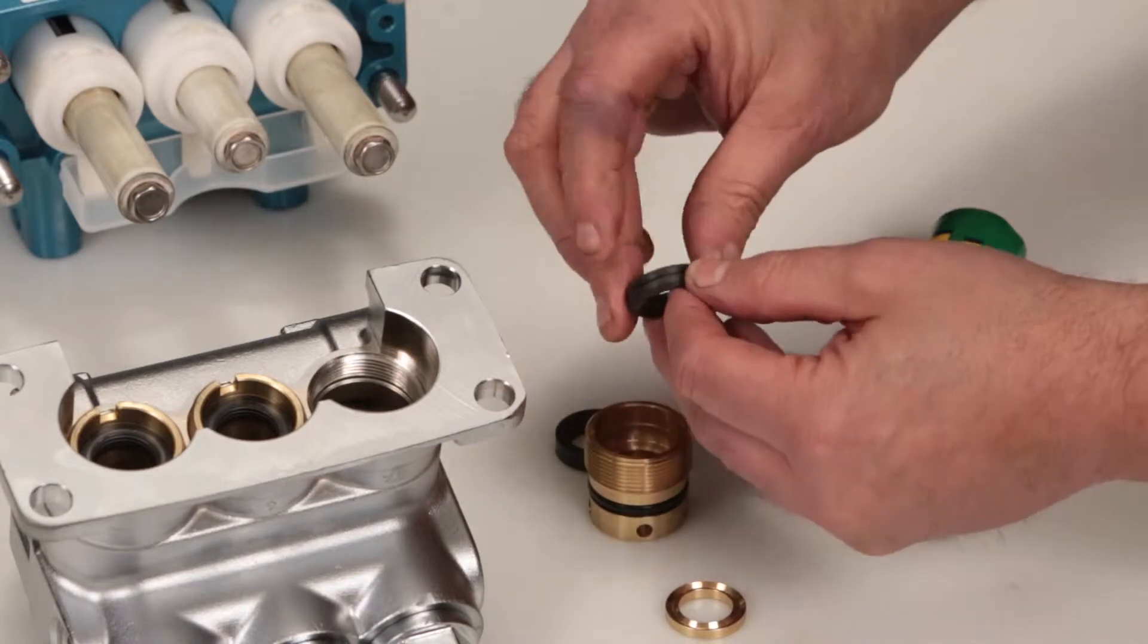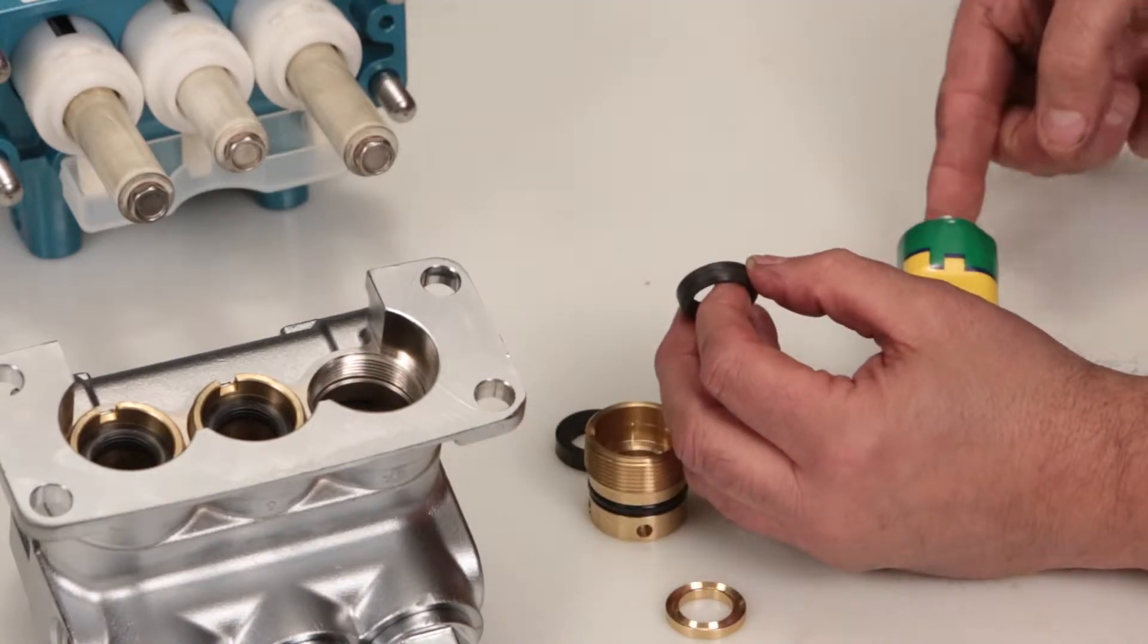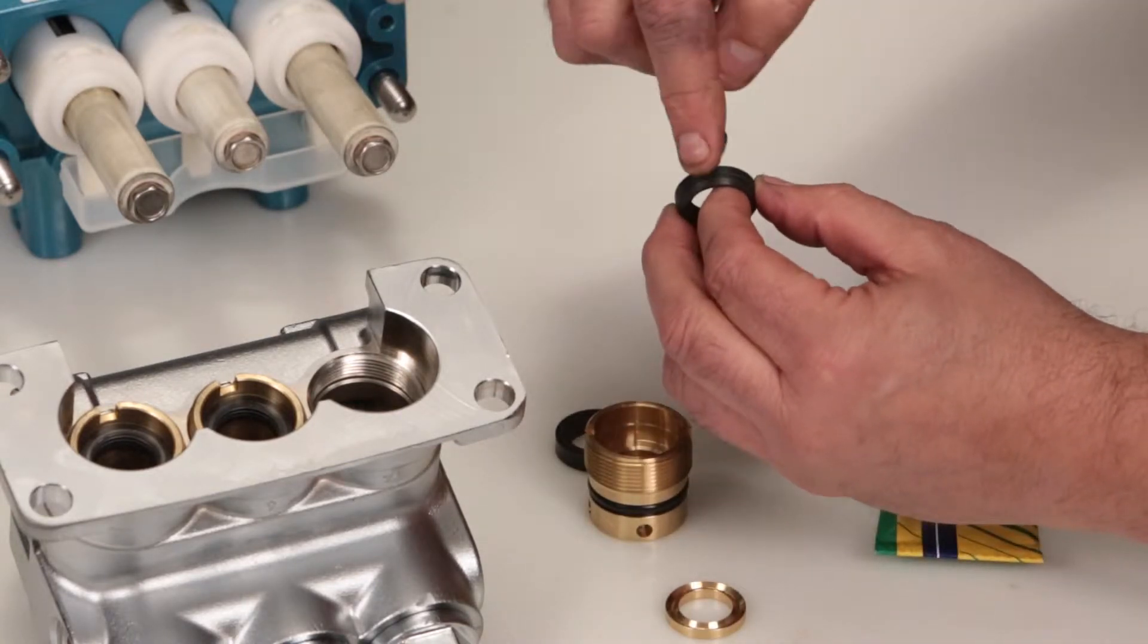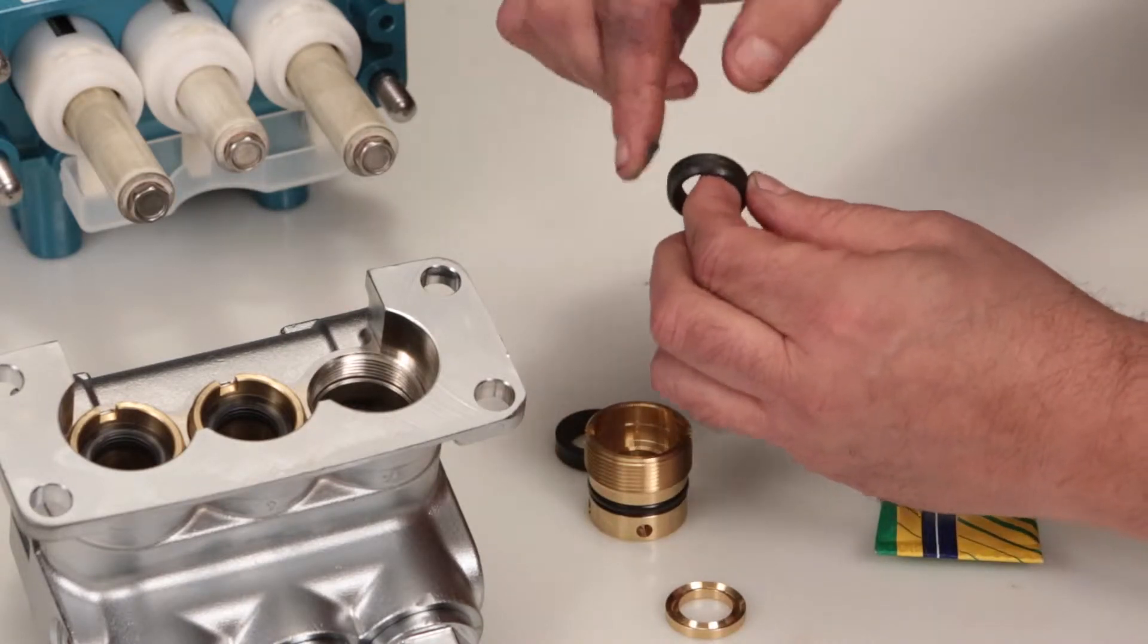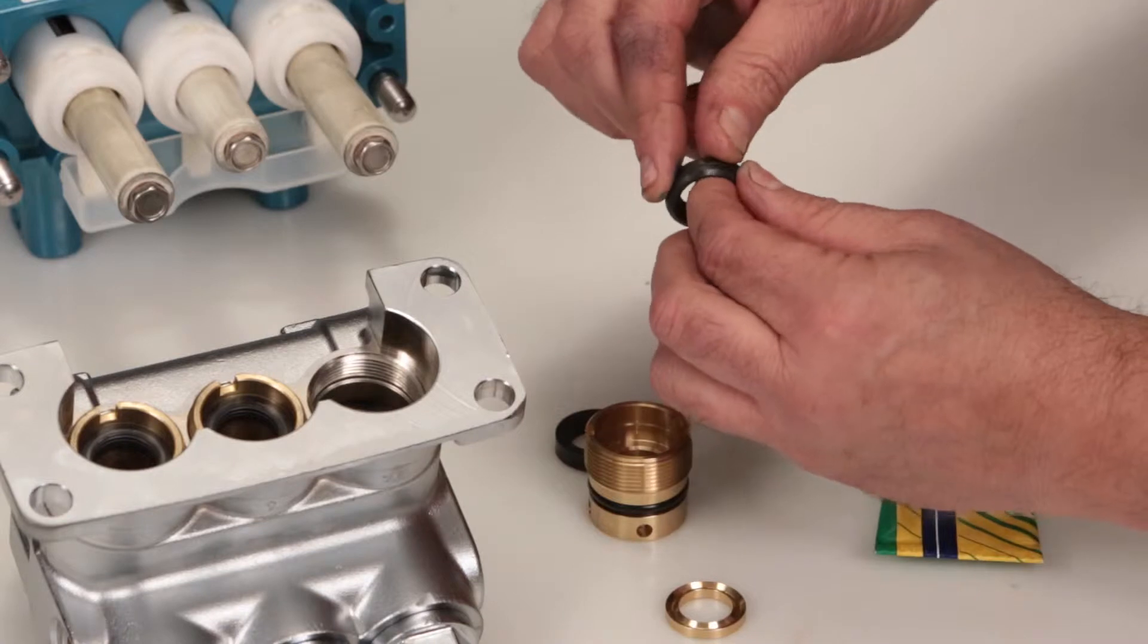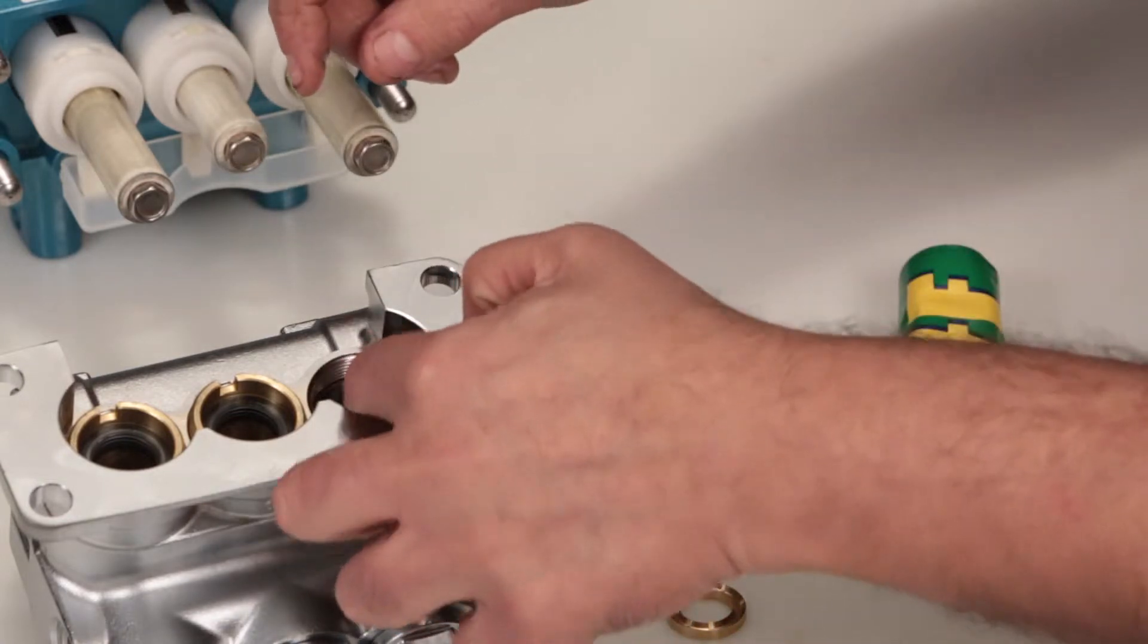Next, install your set of v-packings. Before installing, apply a liquid gasket to the outside surface. Install with the groove side facing down.